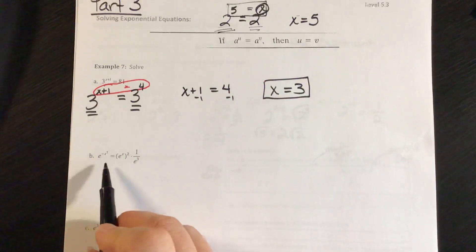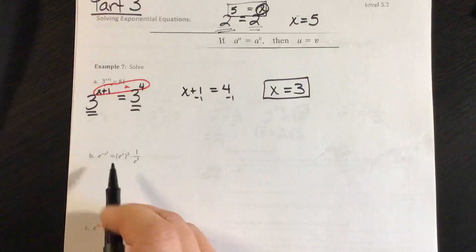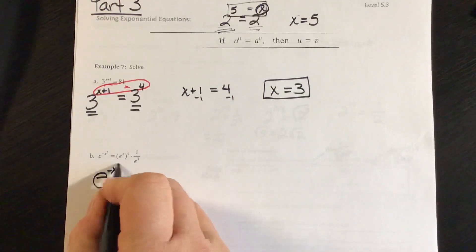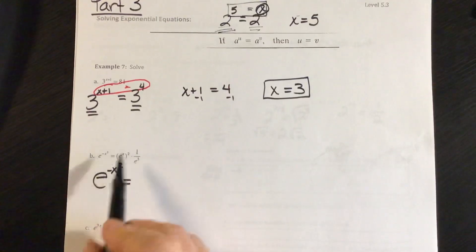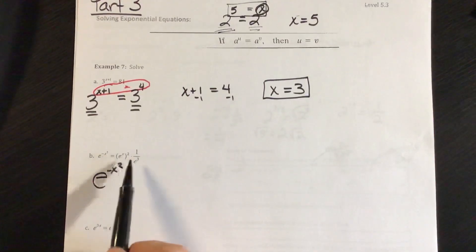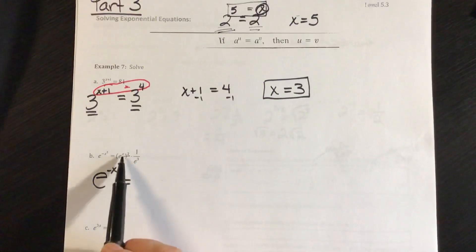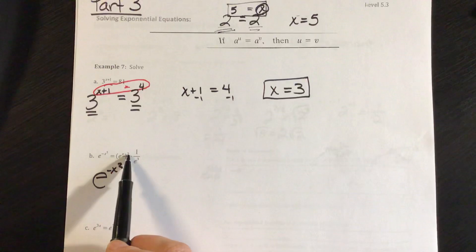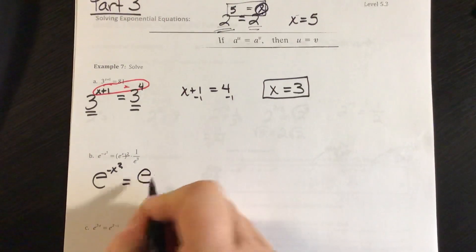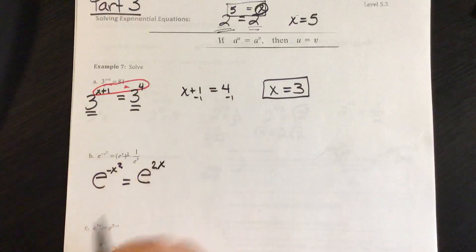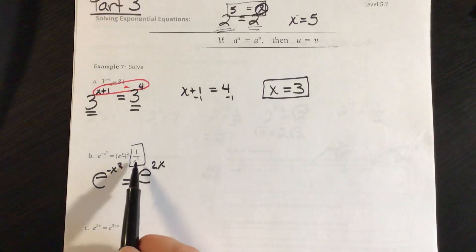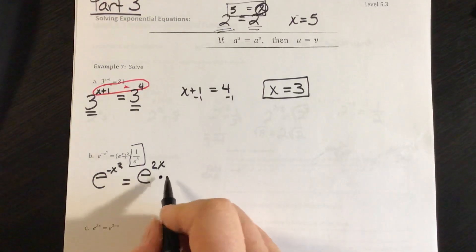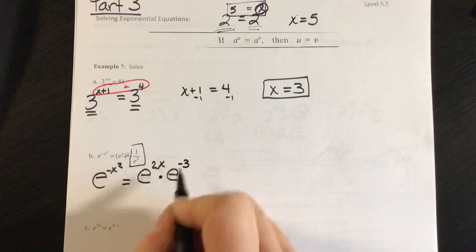Now notice here on the left side, I have e to the negative x squared power. And on the right side, I kind of got a mess here. So if I use my properties of exponents in this part, I have e to the x, and that whole thing is squared. So my property would be to multiply my exponent by 2. So this would be e to the 2x power. And this part right here would give me a negative exponent. So this would be times e to the negative third power.